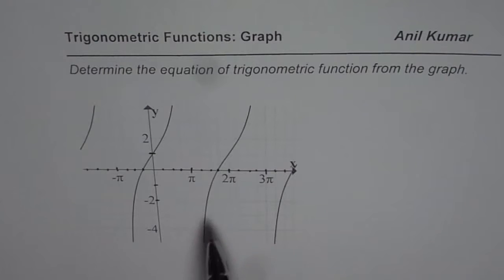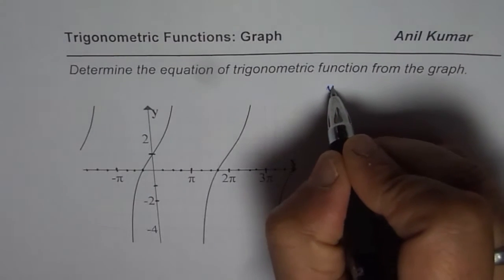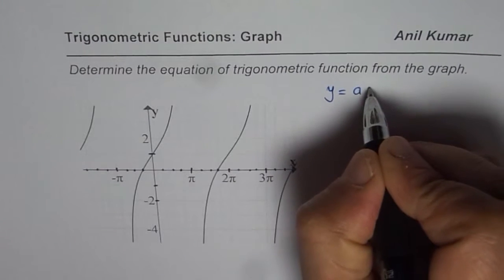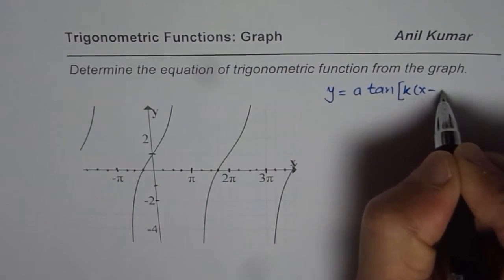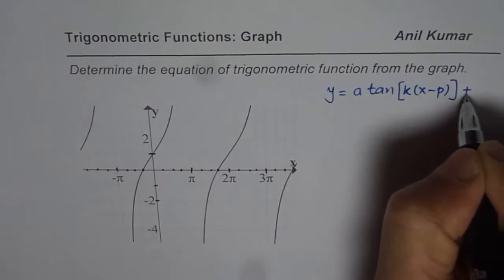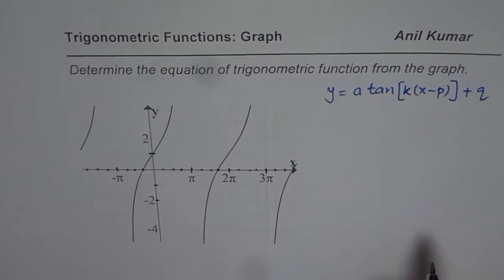As you can see, it is similar to tan graph. So in general, we can write equation as y equals to a tan k times x minus p plus q. That could be a general equation representing the given graph.